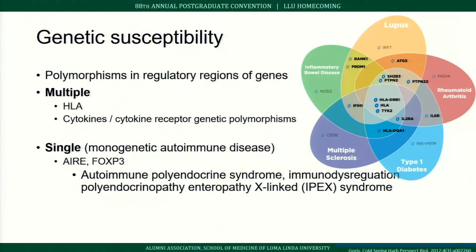The most common genetic findings are polymorphisms in HLA and cytokine or cytokine receptor genes. A complex web of HLA-DRB1, HLA, and TYK2 polymorphisms are common across five autoimmune diseases, with additional disease-specific genetic variants. Single-gene polymorphisms are uncommon and are mainly seen in some endocrinologic diseases.